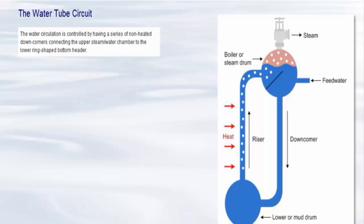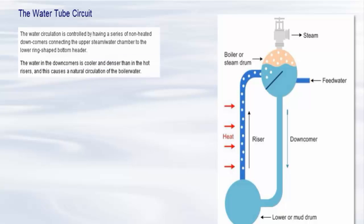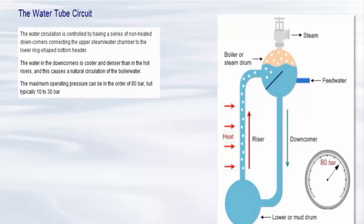Inside a water tube boiler, the water circulation is controlled by having a series of non-heated downcomers connecting the upper steam water chamber to the lower ring-shaped bottom header. The water in the downcomers is cooler and denser than in the hot risers and this causes a natural circulation of the boiler water. The maximum operating pressure can be in the order of 80 bar but is typically 10 to 30 bar.